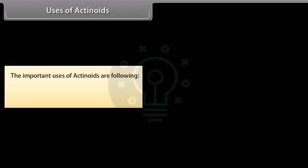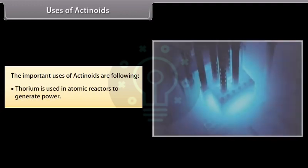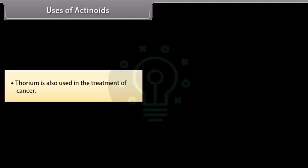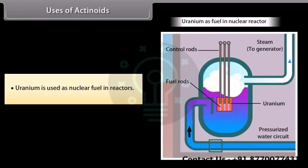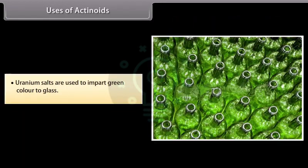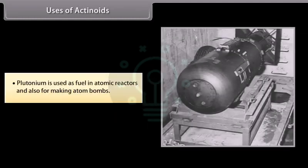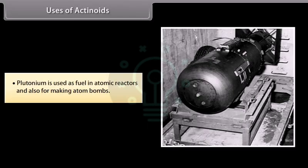Important uses of actinoids: Thorium is used in atomic reactors to generate power and also in the treatment of cancer. Uranium is used as nuclear fuel in reactors, and uranium salts are used to impart green color to glass. Plutonium is used as fuel in atomic reactors and also for making atom bombs.